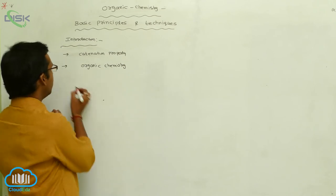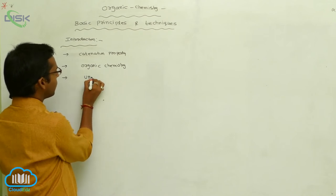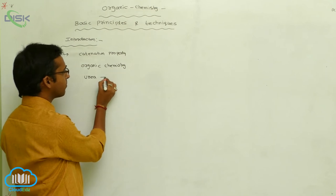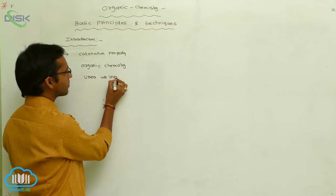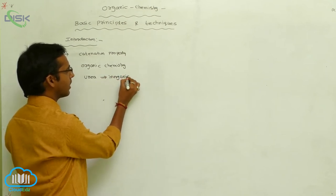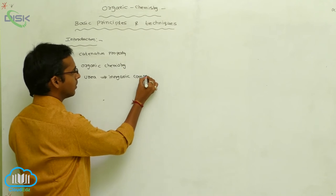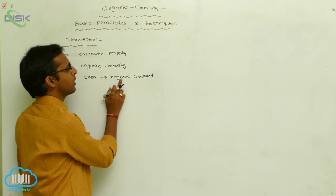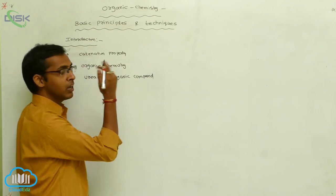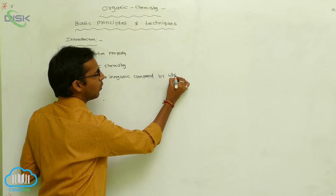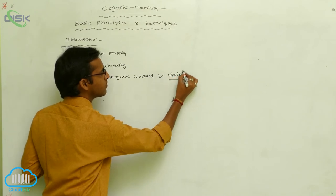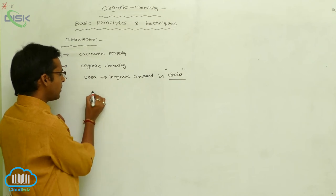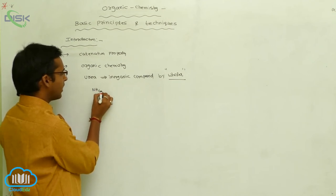The father of organic chemistry is Wöhler. Wöhler was the first scientist who prepared urea. He prepared urea from inorganic compounds — so the first organic compound, urea, was prepared from an inorganic compound by the scientist Wöhler. That is why he is called the father of organic chemistry.